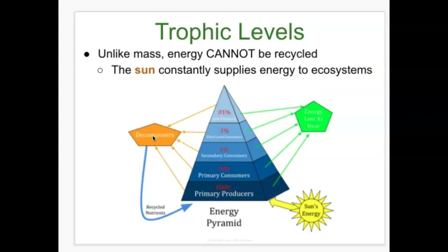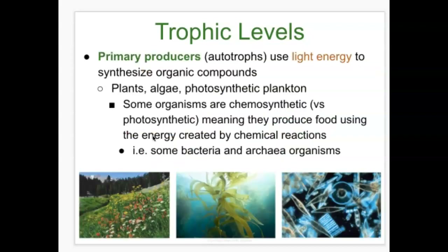At the bottom of the trophic pyramid, primary producers are autotrophs — self-feeders — that use light energy to synthesize organic compounds. These are photo-autotrophs because they carry out photosynthesis. Plants, algae, and photosynthetic plankton are all examples of photo-autotrophs. They determine what the pyramid looks like at all other trophic levels.